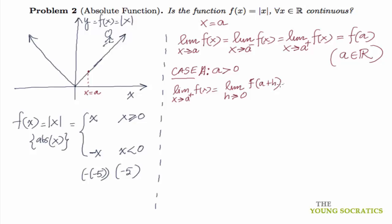Now a+h is greater than 0, so |a+h| will be a+h. a is a constant. Limit of h tending to 0 of (a+h), which is a.